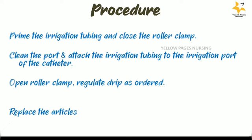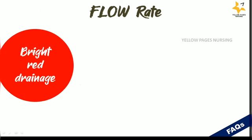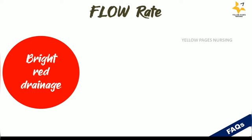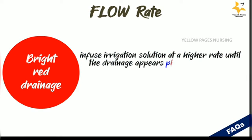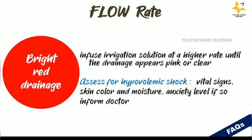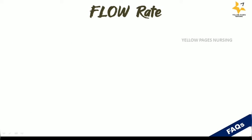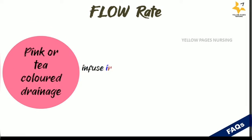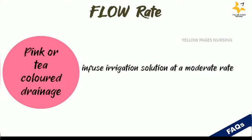The flow rate of the irrigation solution depends on the color of the drainage. If drainage is bright red, the irrigation solution should infuse at a higher rate until drainage appears pink or clear. During irrigation, assess for hypovolemic shock by monitoring vital signs, skin color and moisture, and anxiety level — inform the doctor if needed. If drainage is pink or tea-colored, maintain a moderate infusion rate. If drainage is clear, the infusion may also be at a moderate rate.